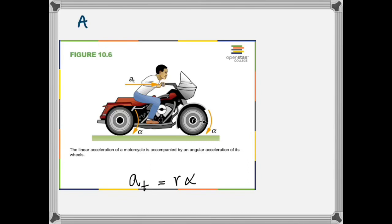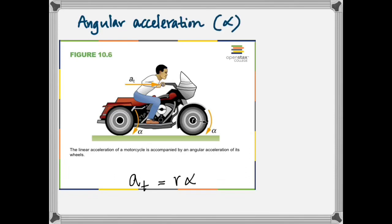Angular acceleration is defined as the change in angular velocity divided by time. Therefore, its unit is radians per second squared.